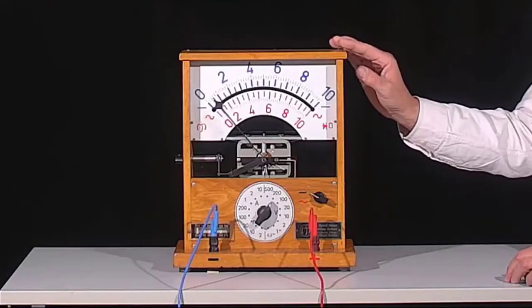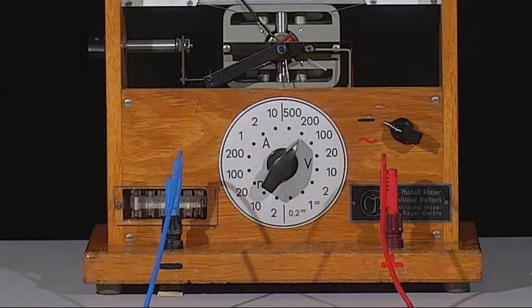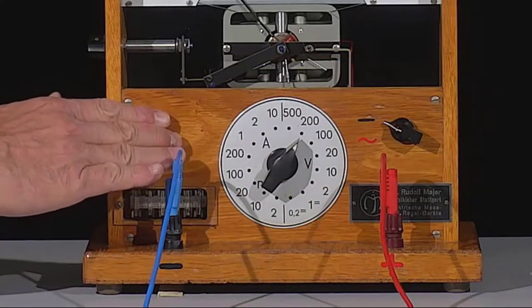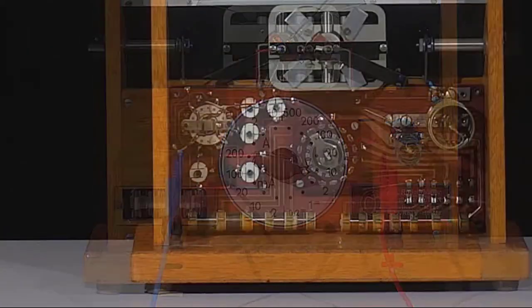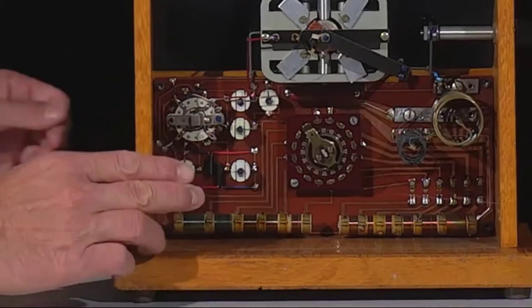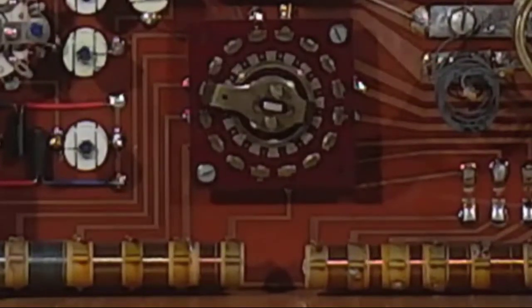With this historic multimeter, the principle of the measuring range setting can be represented. The voltage measuring range is changed via the selector switch. Different taps of an internal resistance network are selected so that the voltage to be measured is optimally displayed on the pointer instrument.